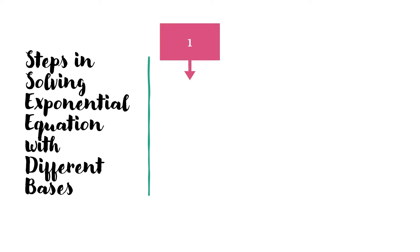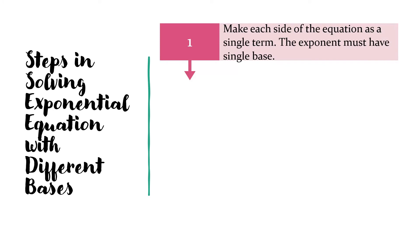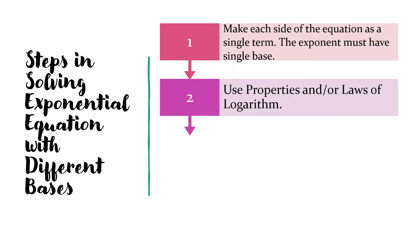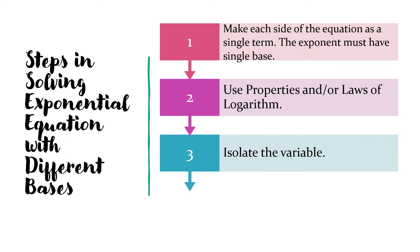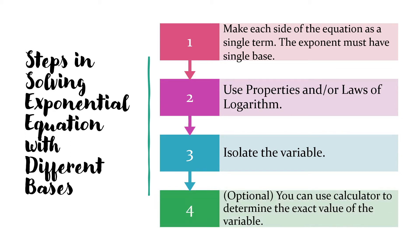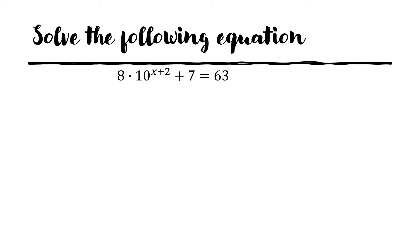First, we have to make each side of the equation as a single term — the exponent must have a single base. For the next step, we have to use the properties or laws of logarithm. And then, we can isolate the variable. And, of course, this is optional: if you have a calculator, you can determine the exact value of the variable. For example, let's have an example.